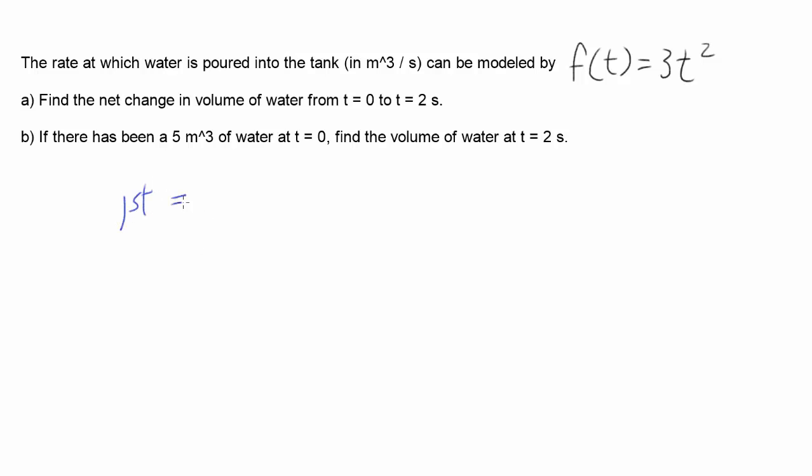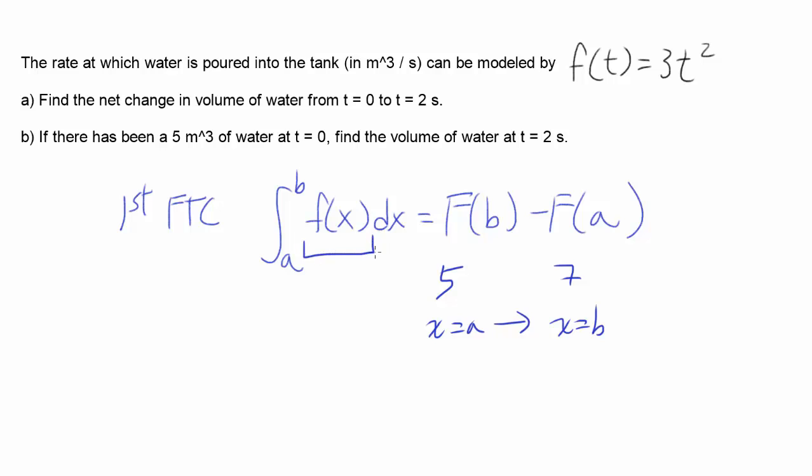The first fundamental theorem of calculus tells you the definite integral from a to b of some function dx is equal to the change in antiderivative from a to b. So if the antiderivative has been 5 at x equals a and it's changing to 7 at x equals b, our fundamental theorem tells you that the area under the curve from a to b is equal to the change in antiderivative, or 2.